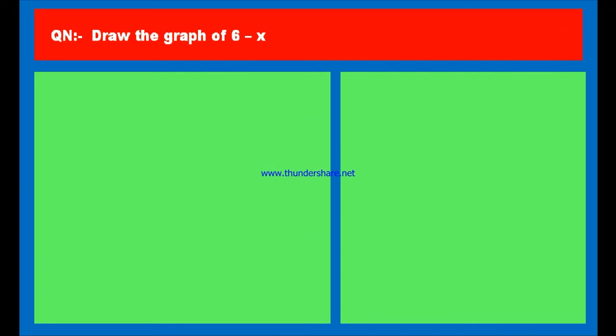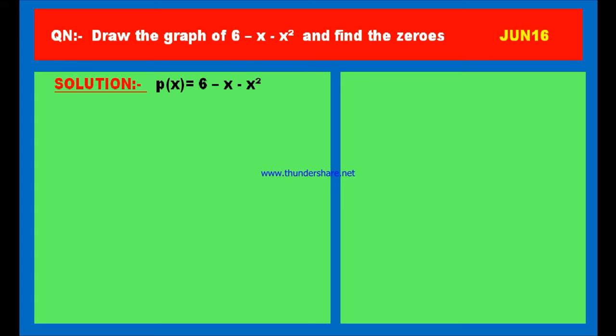Another question: Draw the graph of 6 minus x minus x squared and find the zeros. This appeared in June 2016. We are covering all three different and difficult models of drawing the parabola in this video. This is a different shaped parabola. Solution: P of x is equal to 6 minus x minus x squared. Let us draw the table for this.